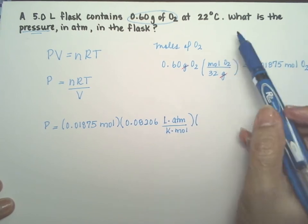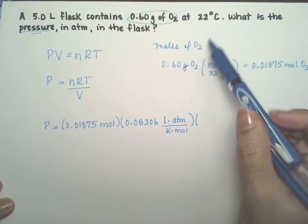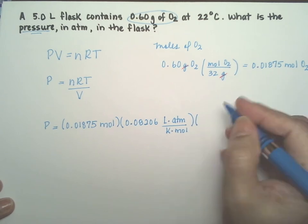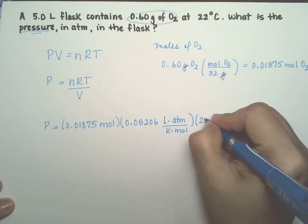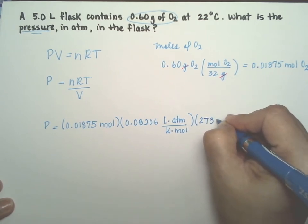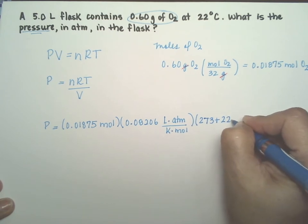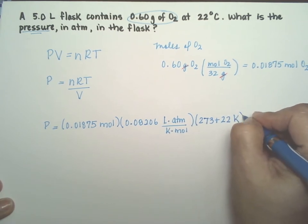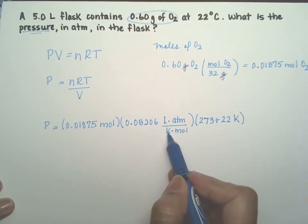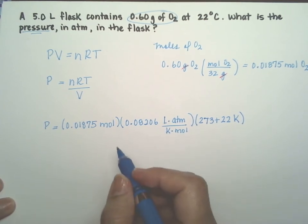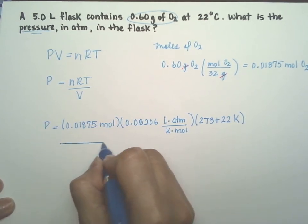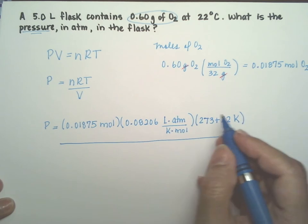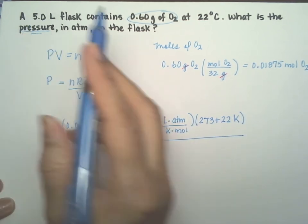The temperature is 22 degrees. Real quick, if you want to convert it to kelvins, add 273. And kelvins are going to cancel here. And now I'm going to have to make a really huge line here. We divide by the volume, and the volume is 5 liters.